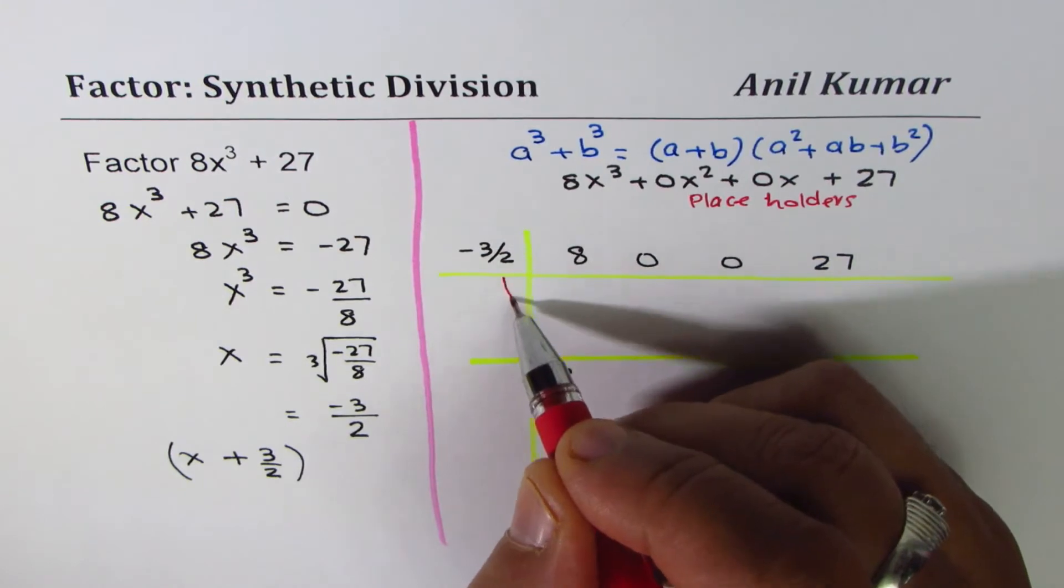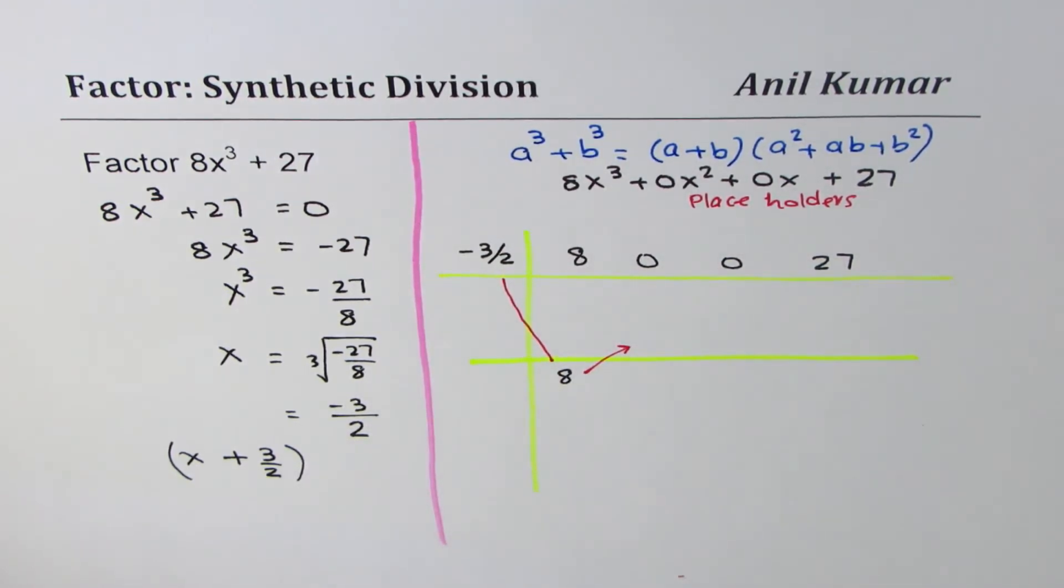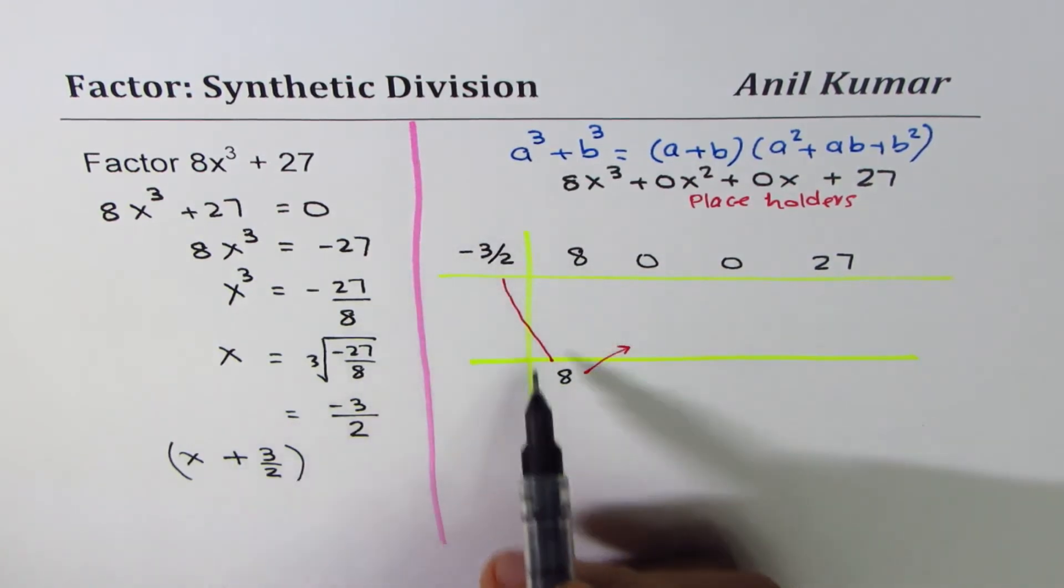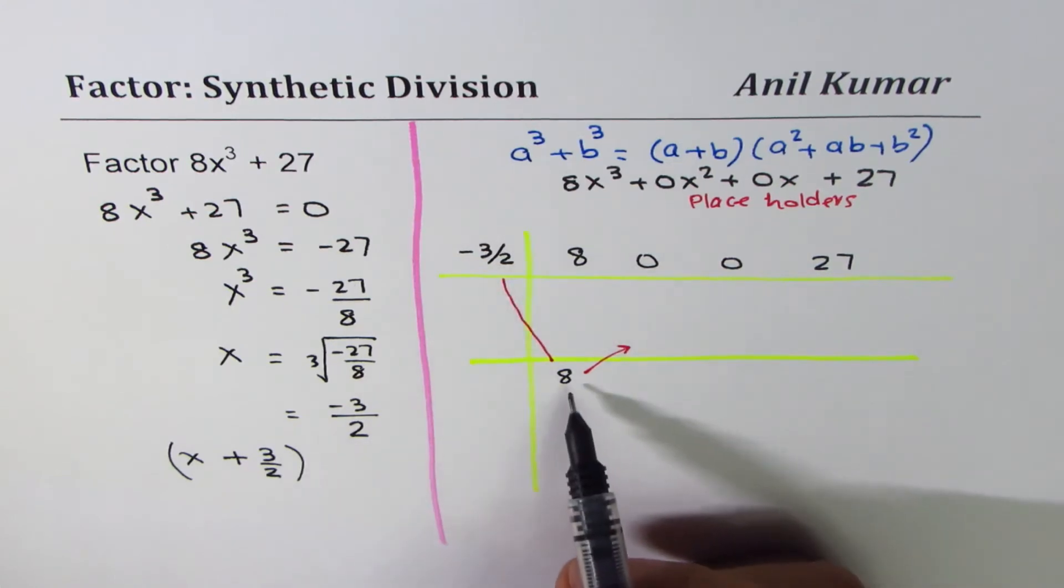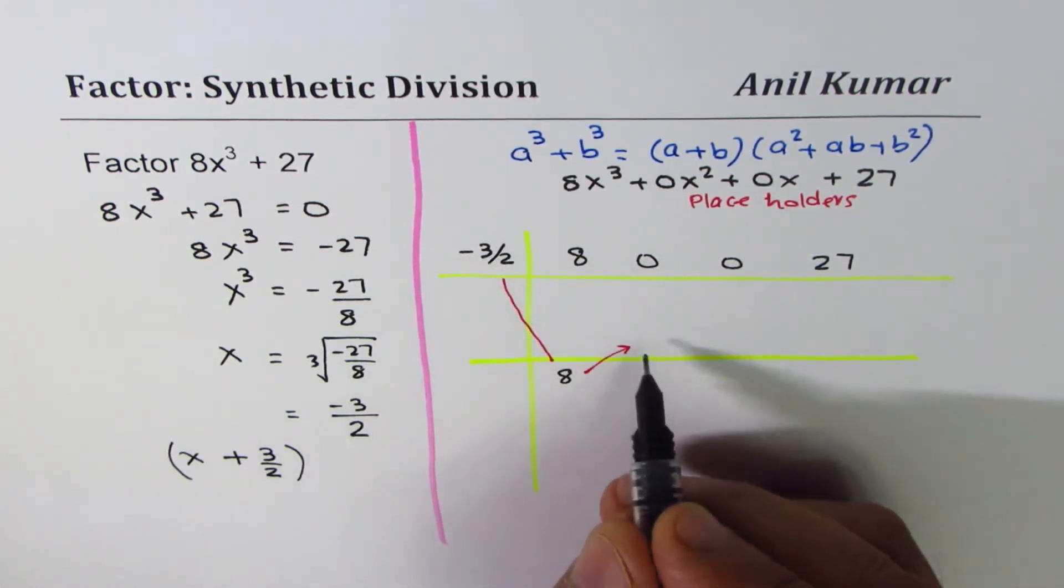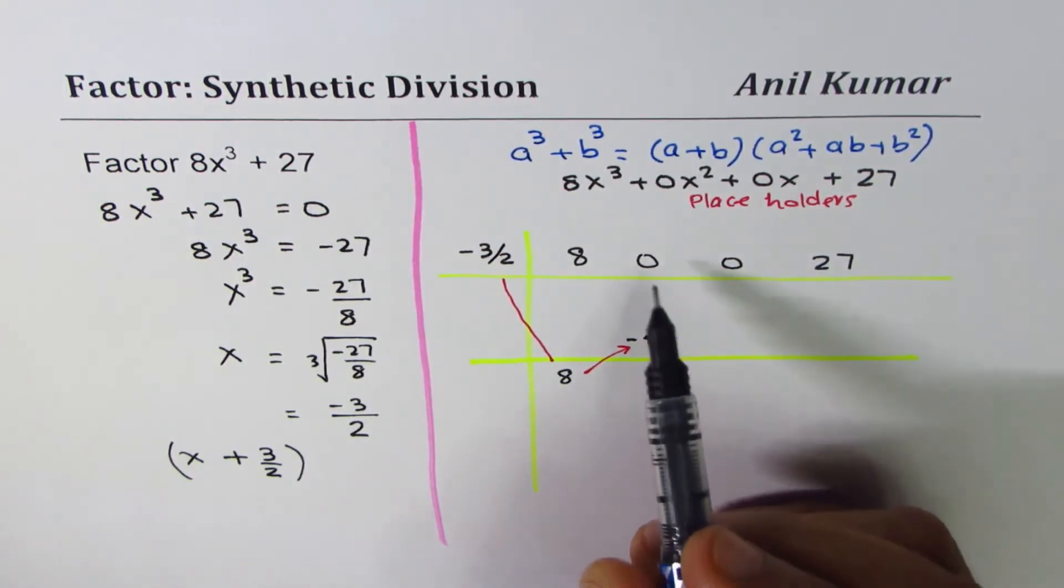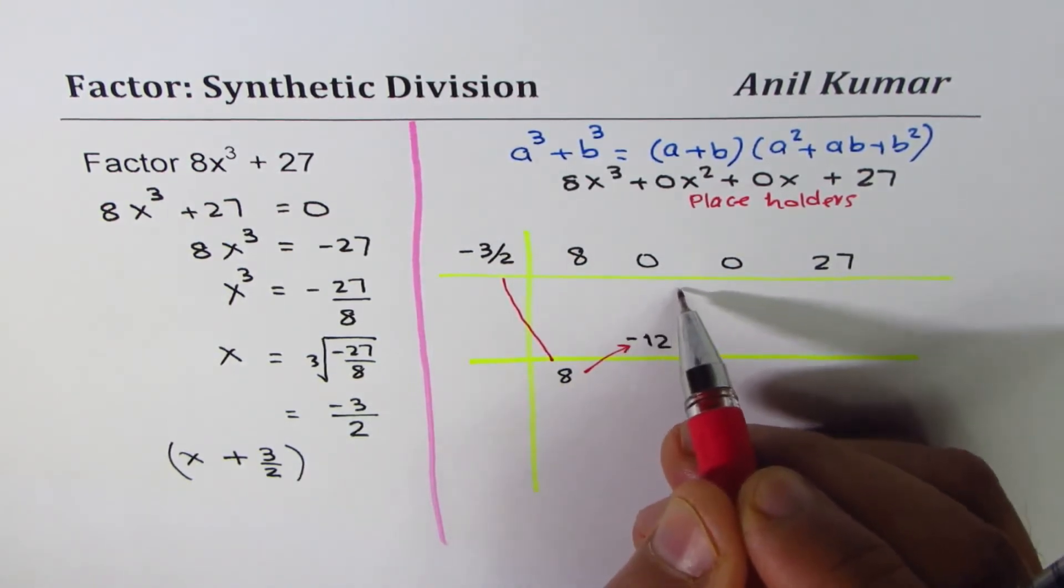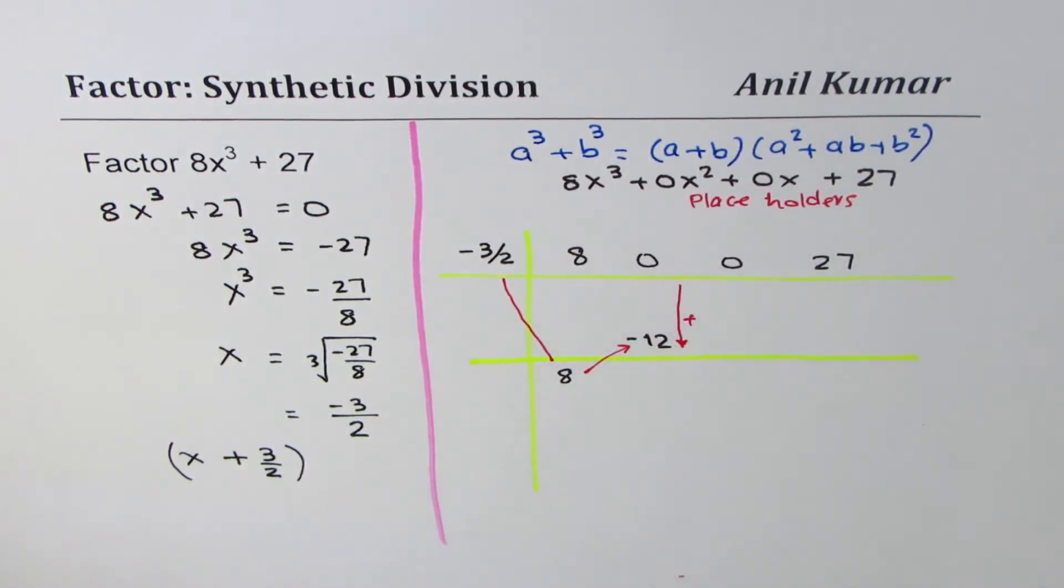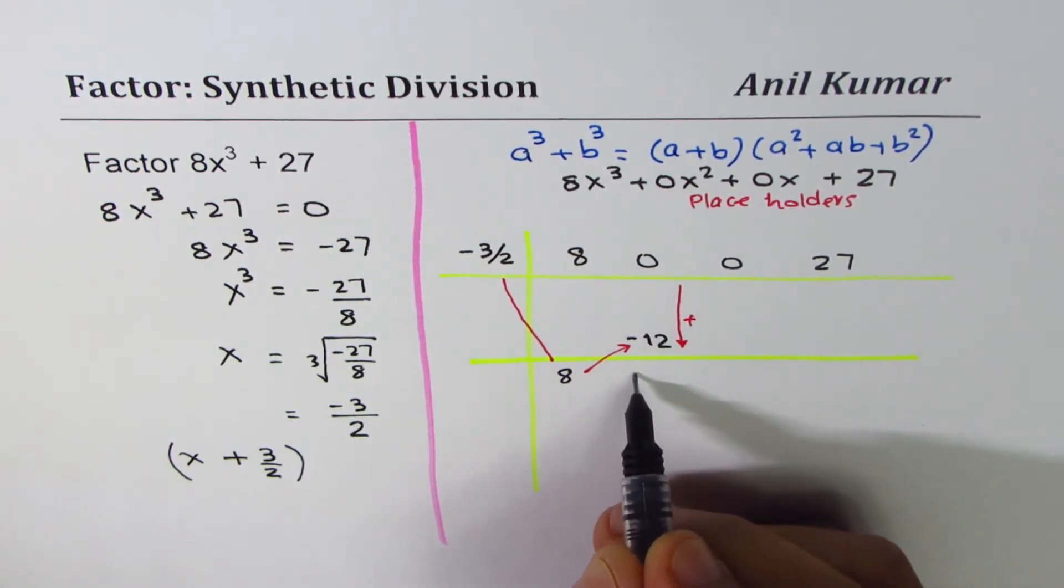Multiply these two terms and the product is written there. When you multiply -3/2 times 8, 4 times is 12, you get -12 here. Now add these two terms, so let's add them, and we get -12.